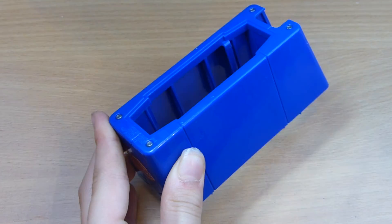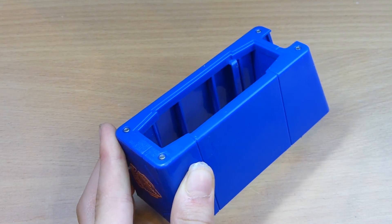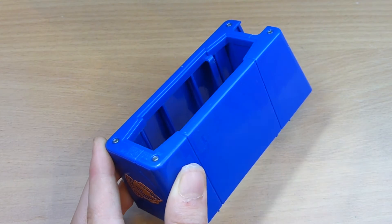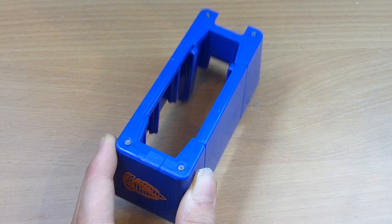A lot of crazy Nerf modifications use magazine welds. In the past, a lot of people would use something like this. A Raider or Rampage magazine weld is quite convenient for this application, as it is a separate piece of the blaster. However, using this part renders an entire blaster useless.